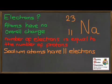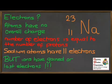We need to just say a word of caution here: that's not the case for ions. Ions have gained or lost electrons depending on their charge, and so they will have a number of electrons that is different from the number of protons present in the atom.